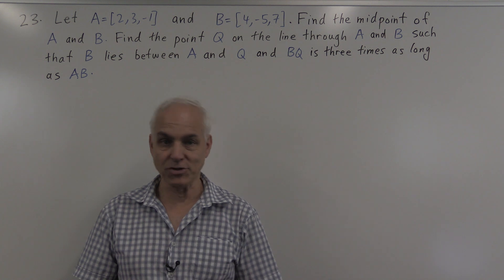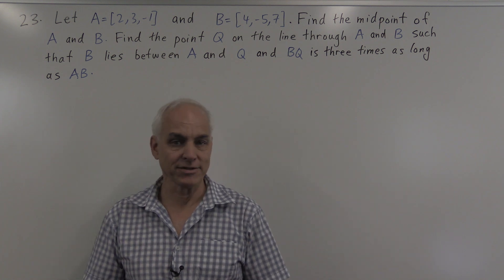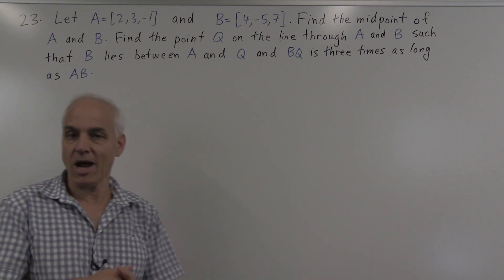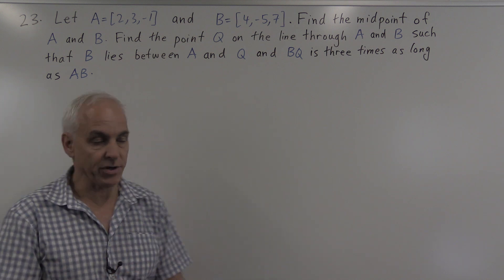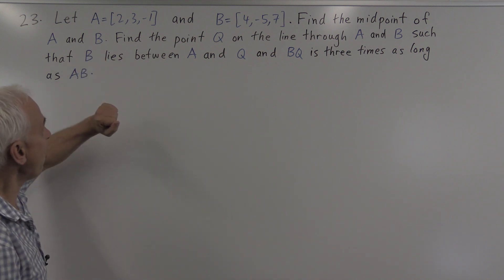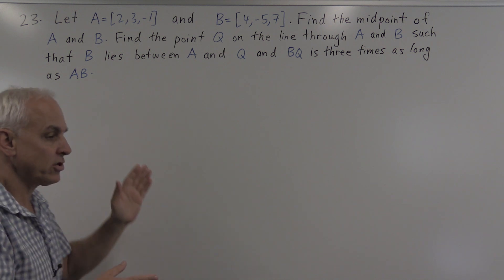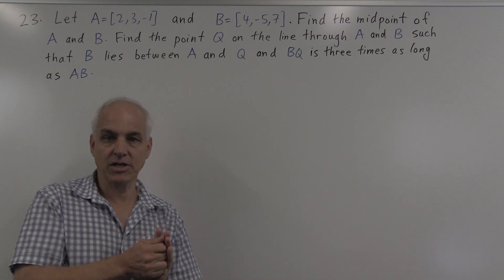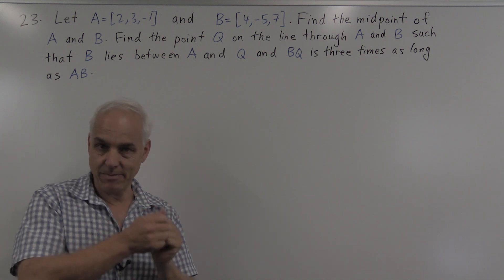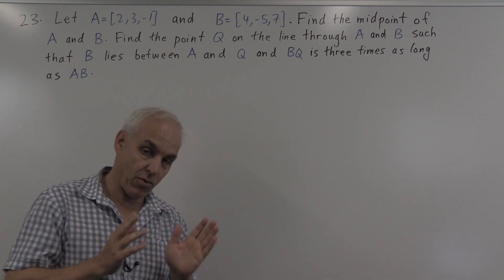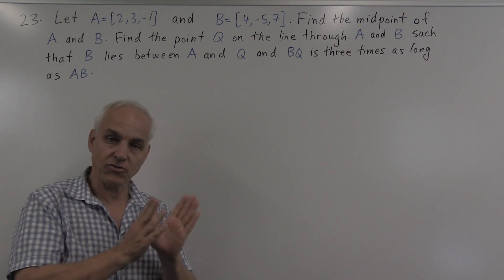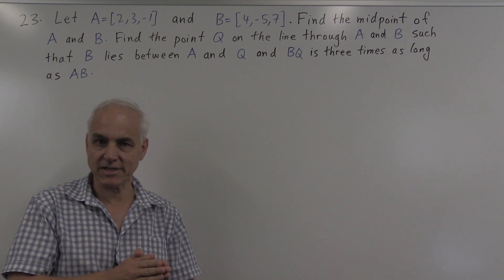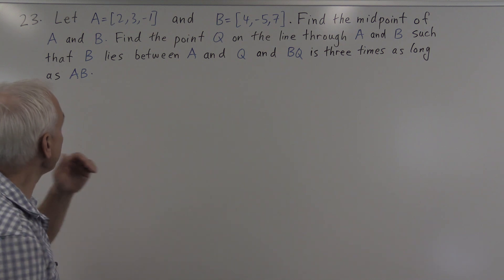Hello everyone. We're at the University of New South Wales and I'm Norman Weilberger. This is question 23 from chapter 1 of the Linear Algebra Notes. It's a problem involving vectors and linear combinations or affine linear combinations on a segment. It's actually a question that is very useful for a lot of things, in particular for physics. Alright, so let's have a look at this question.